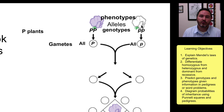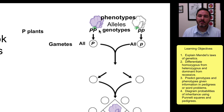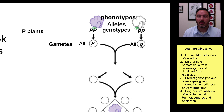The true breeding white flowered pea plant has a little P, little P. So the only gametes that can be produced by a big P, big P plant are big P, and the only gametes that can be produced by a little P, little P plant are little P's.